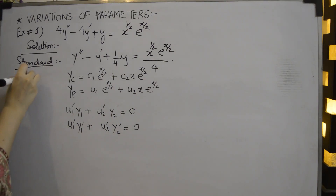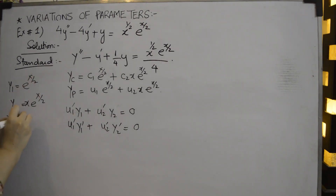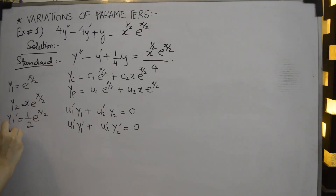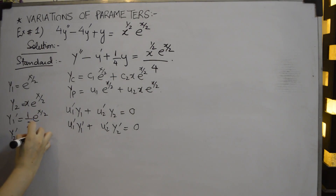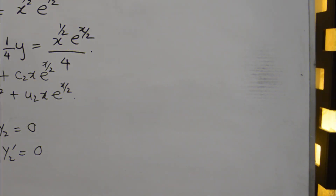We identify y1 = e^(x/2) and y2 = x*e^(x/2). Taking the first derivatives: y1' = (1/2)*e^(x/2). For y2' we use the product rule: y2' = e^(x/2) + (x/2)*e^(x/2). We then form the Wronskian from these.